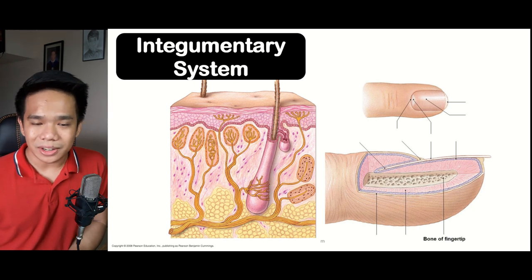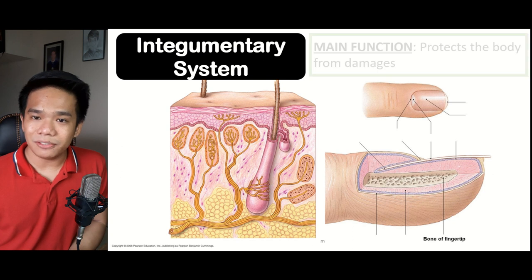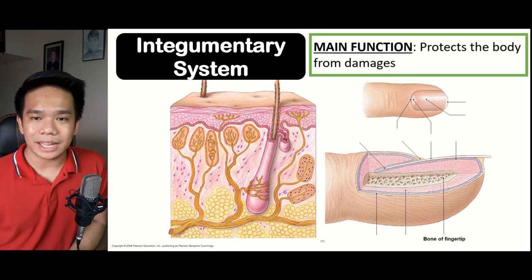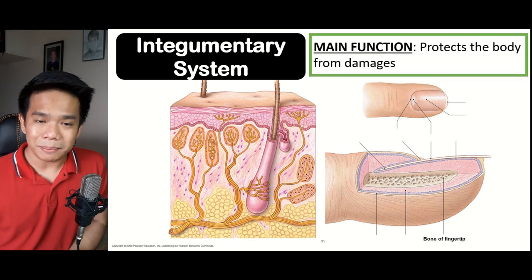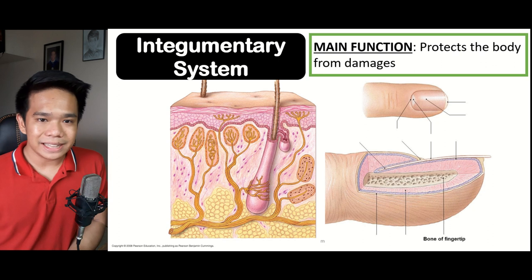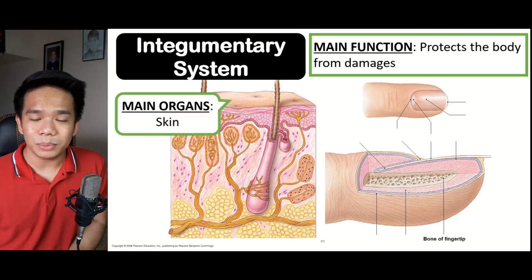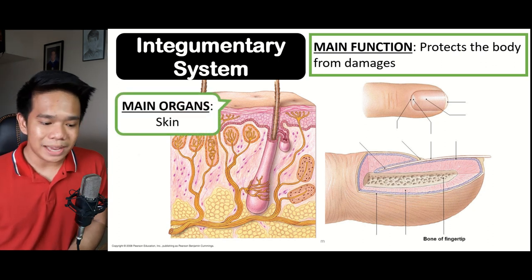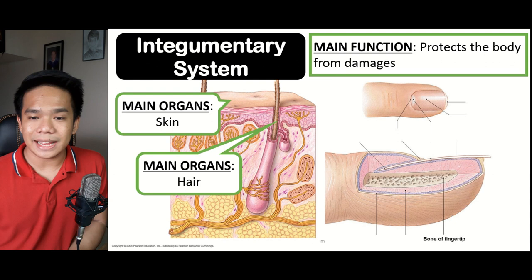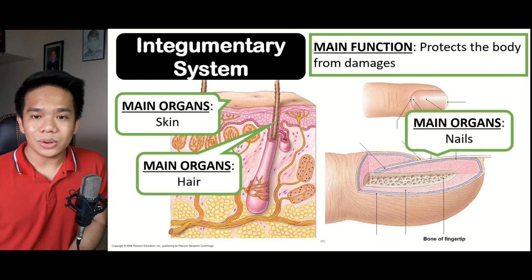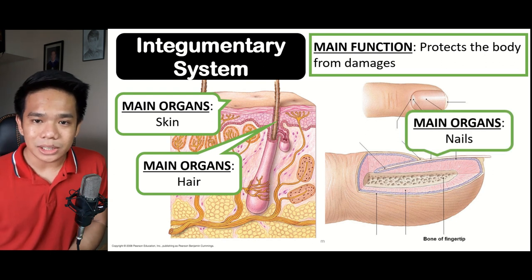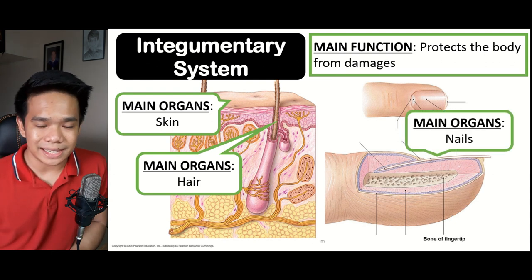The integumentary system's main function is for the protection of the body against different damages. The integumentary system is primarily comprised of the skin. Embedded with the skin, we have the nails and the hair. We'll be focusing on the different structures within the skin.